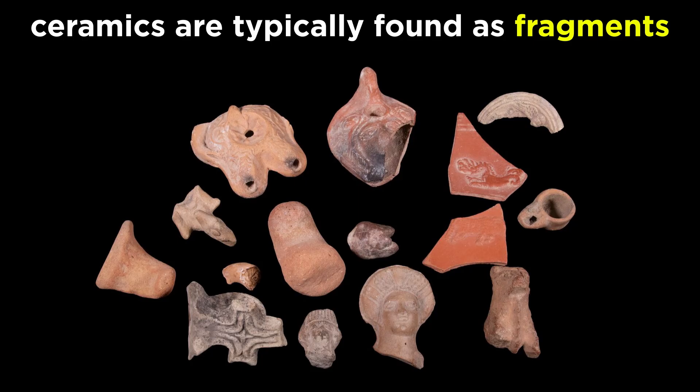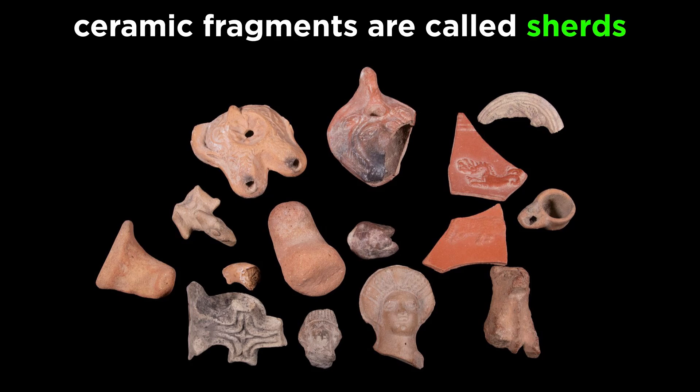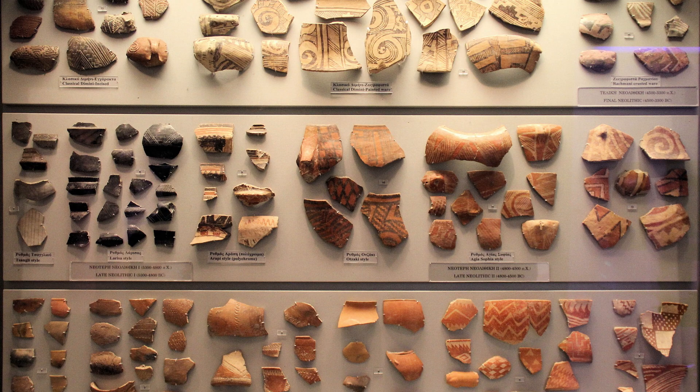It's very rare for an entire ceramic piece to be found whole in the ground. It is much more likely to find small fragments of a larger piece. A ceramic fragment is called a sherd. Ceramics can also be put into typologies to better date and identify them. To do this, we need to be able to describe a ceramic.